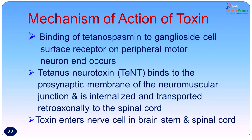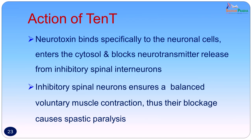There is binding of tetanospasmin to the ganglioside cell surface receptor on the peripheral motor neuron end. It binds the presynaptic membrane of the neuromuscular junction, is internalized, and is transported retroaxonally to the spinal cord. The toxin enters nerve cells in the brain stem and spinal cord — starting from the wound side, attaching to the ganglioside cell surface receptor on the presynaptic membrane, then internalized and transported retroaxonally to the brain and spinal cord.